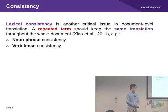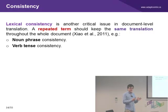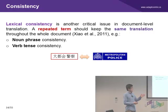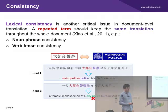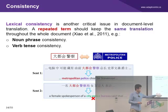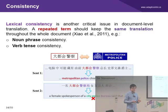The third aspect is lexical consistency, which is a critical issue in document-level translation. The definition is: a repeated term should keep the same meaning throughout the whole document. For example, the Chinese phrase 大都会警察, a proper noun meaning metropolitan police, may be translated as 'metropolitan police' in the first sentence, but then translated differently as 'city police bureau' when it appears again in the second sentence. We think this leads to inconsistency problems during translation.